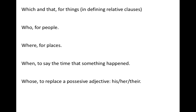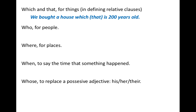Which and that we use for things in defining relative clauses. For example: 'We bought a house which, or that, is 200 years old.' Remember, we can separate that sentence into two clauses — the main clause and the relative clause. The main clause would be 'we bought a house,' and the second clause is 'the house is 200 years old.' We use which to replace 'the house' in the relative clause.